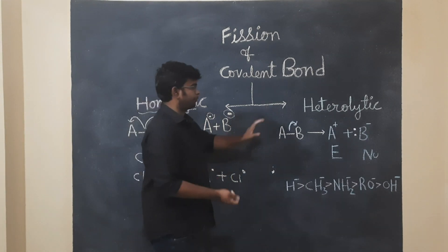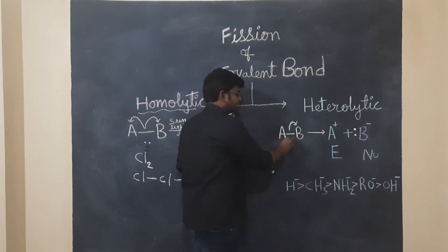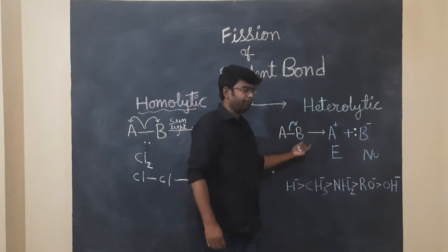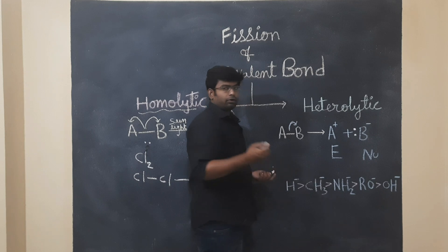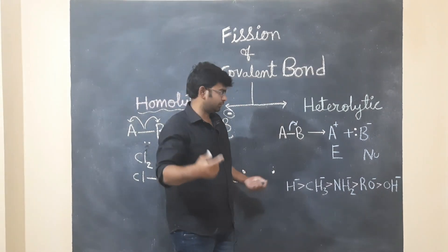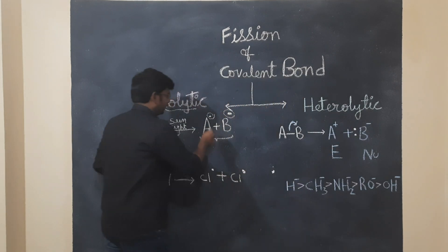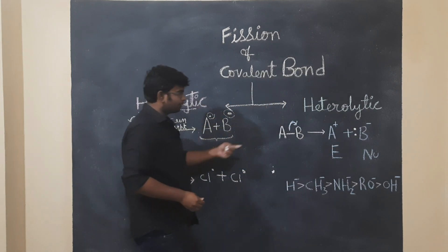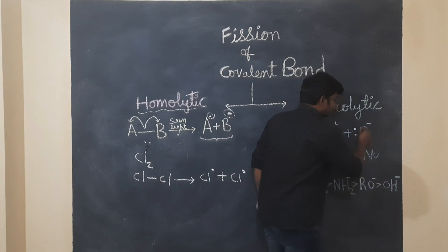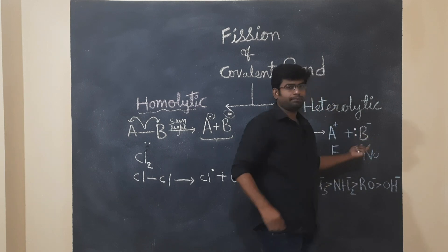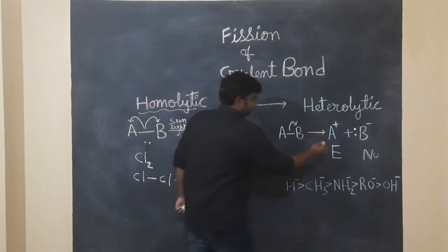If we have different compounds, the bond is breaking. The electrons are shared with different atoms. So if we have A and B, one is electron rich and one is electron deficient compound.